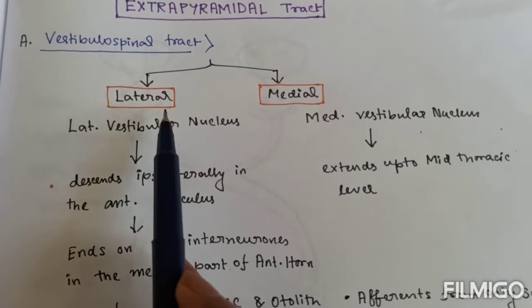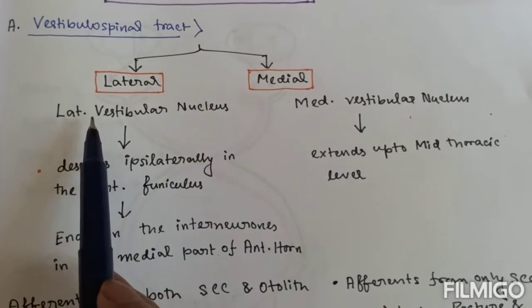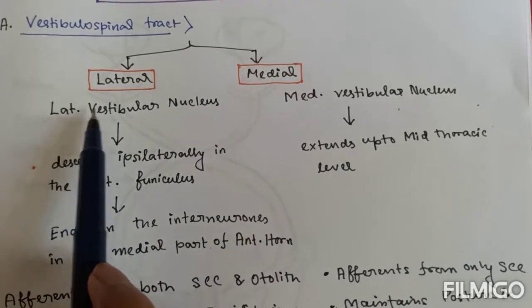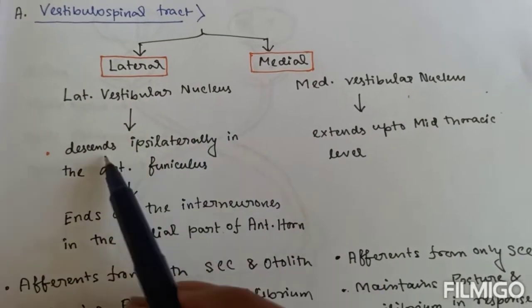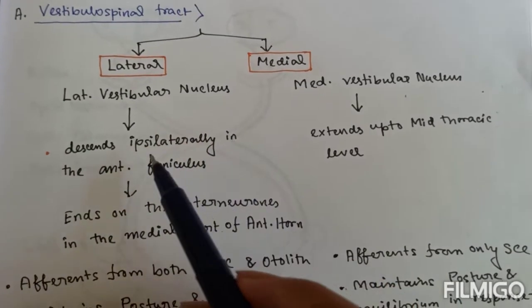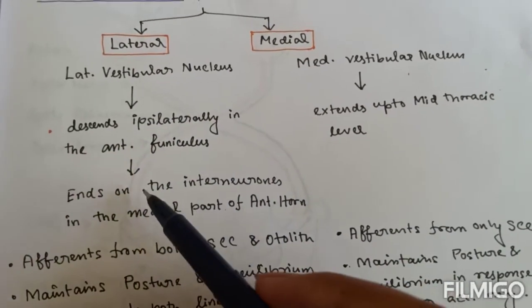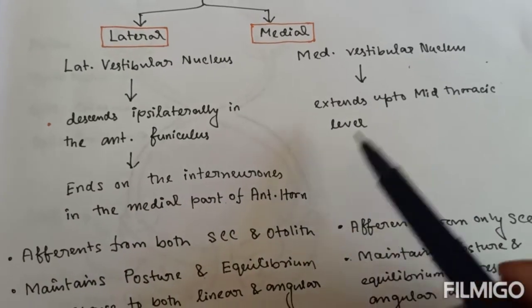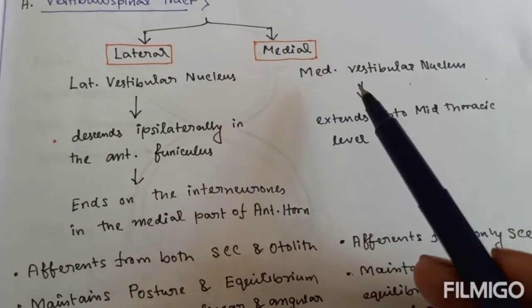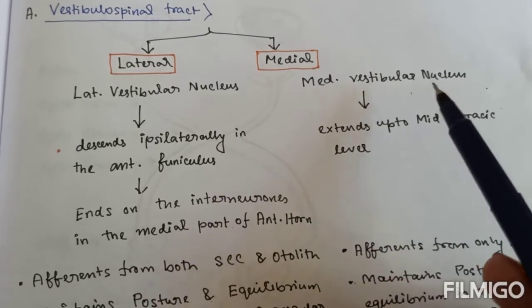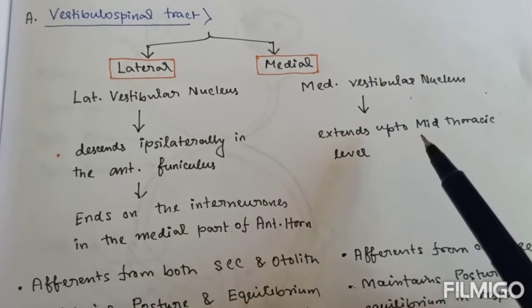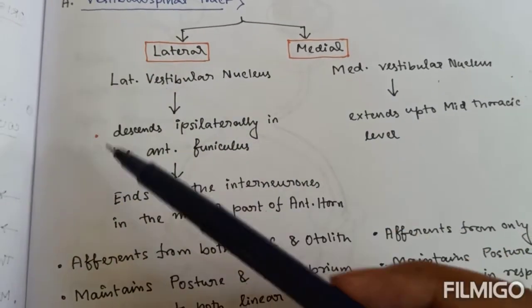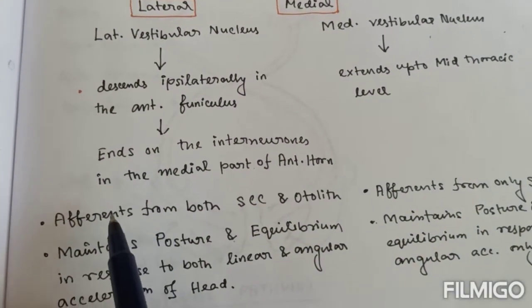First, the vestibulospinal tracts. There are two types: lateral and medial. The lateral vestibulospinal tract originates from the lateral vestibular nucleus, then descends laterally in the anterior funiculus, and ends on interneurons in the medial part of the anterior horn. The medial vestibulospinal tract originates in the medial vestibular nucleus and extends up to the mid-thoracic level.